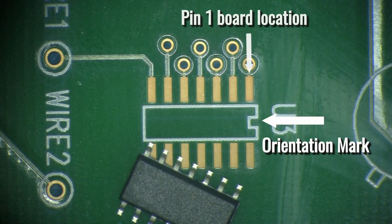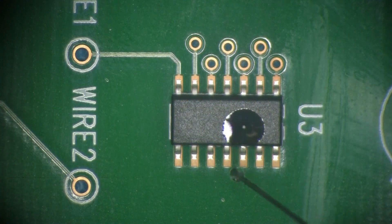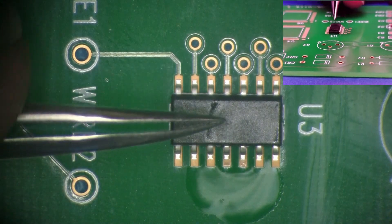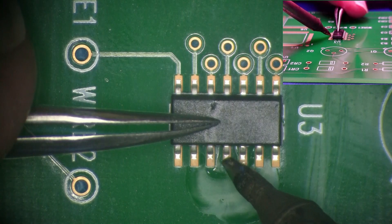Note the orientation marking on the circuit board and align the component with the correct orientation. Apply flux to the component and board land to help facilitate the solder connection. Use a small amount of solder on the soldering iron tip to tack solder one lead to the board. This will hold the component in position.